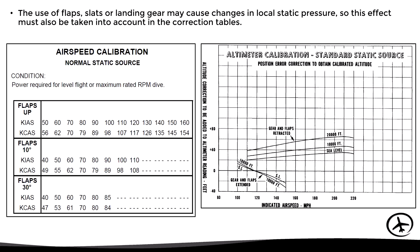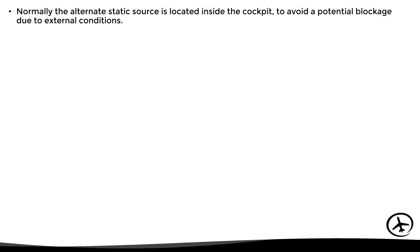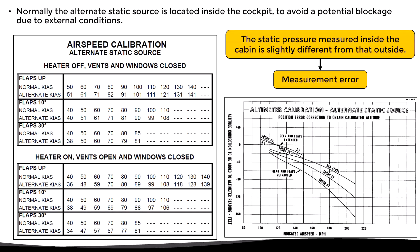The static port provides information to all three instruments. Now, the pitot tube had a heating system to prevent ice blockage — so what happens if the static port gets blocked? For this case we have an alternate static source, which is basically an additional static port connected to the system that can be activated by a switch in the cockpit. However, this alternate static port is normally located inside the cabin to avoid potential blockage due to external conditions. The problem is that the static pressure measured inside the cabin is slightly different from the exterior static pressure, producing a slight error in the measurement. This error is taken into account in the calibration tables — make sure the calibration table you are using is for the alternate static source instead of the normal one.